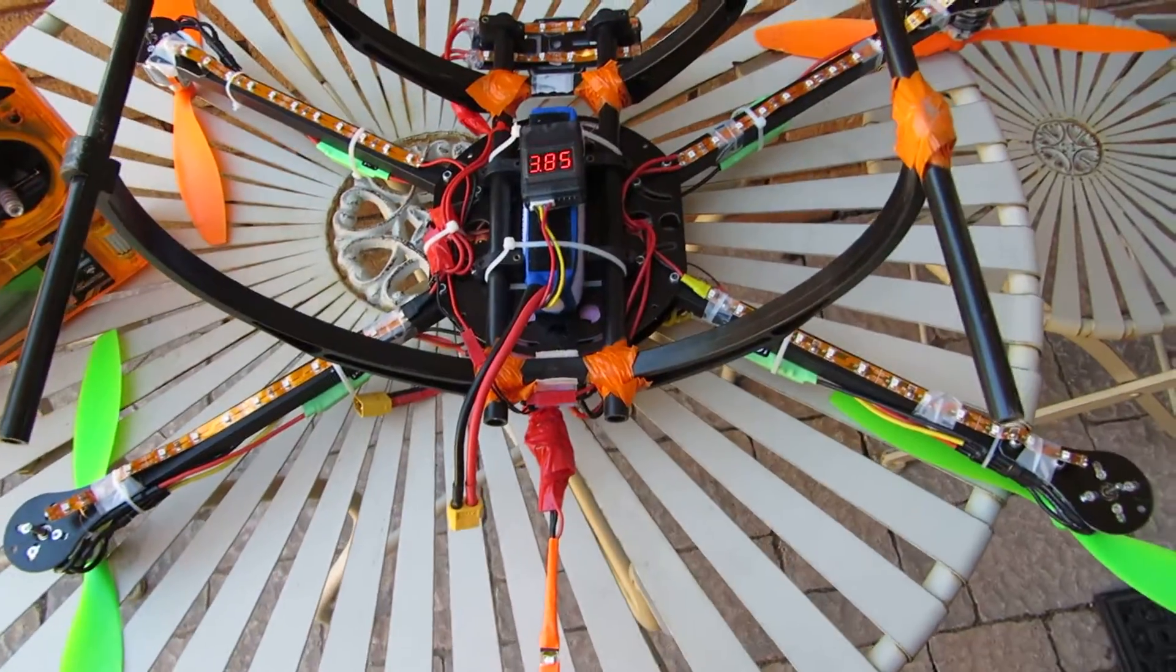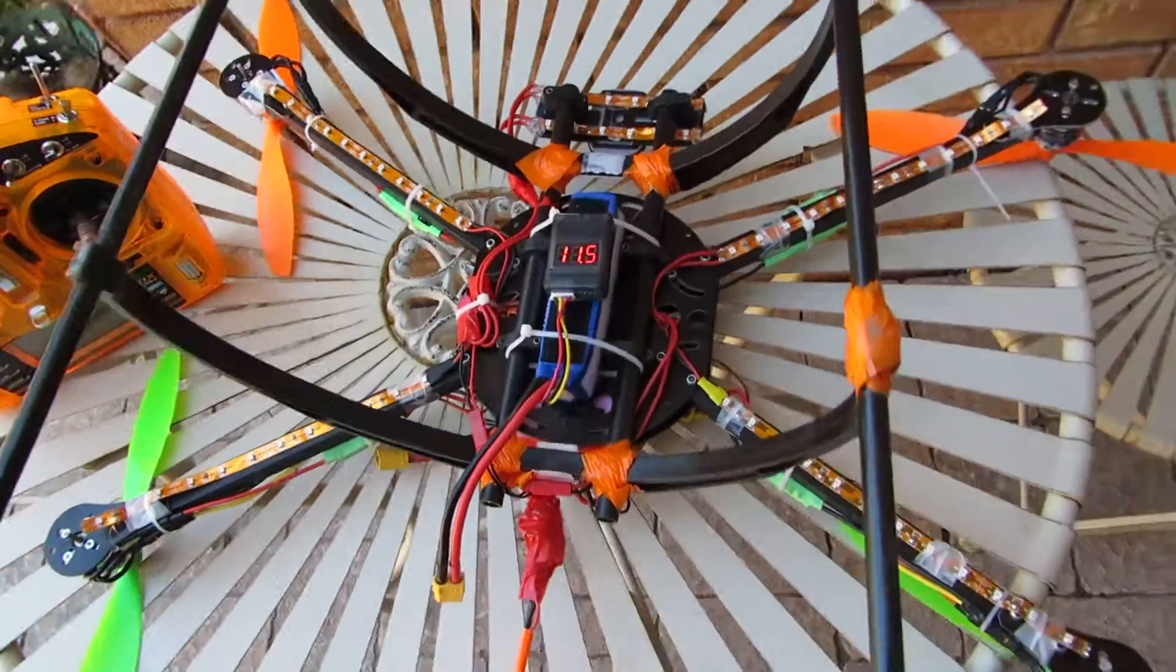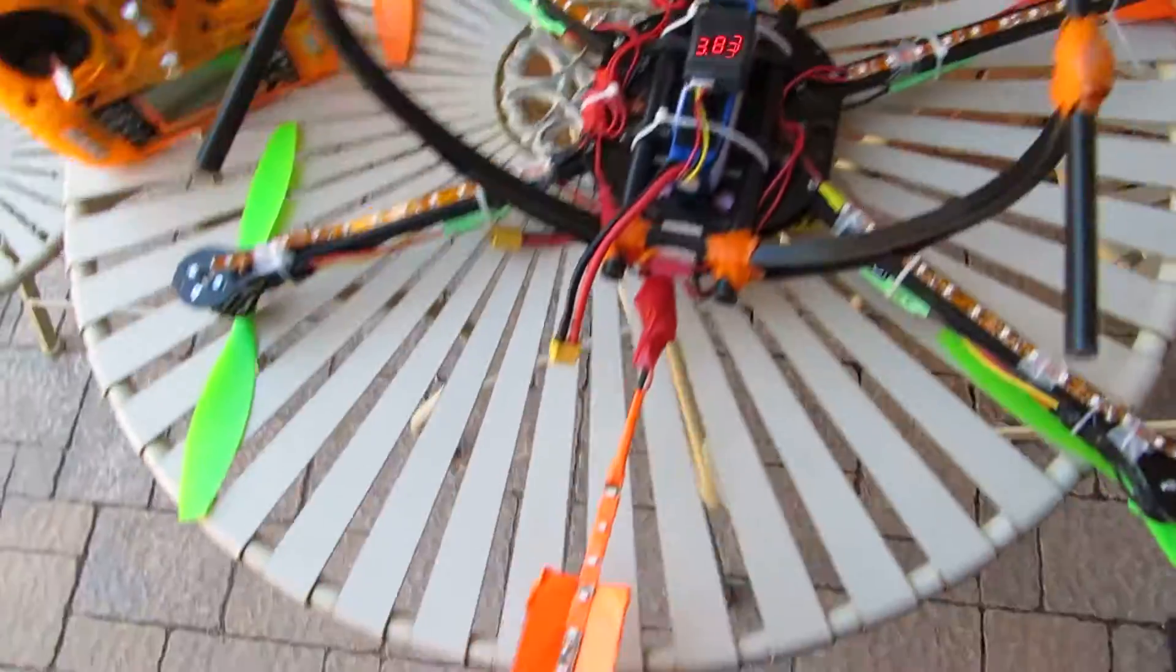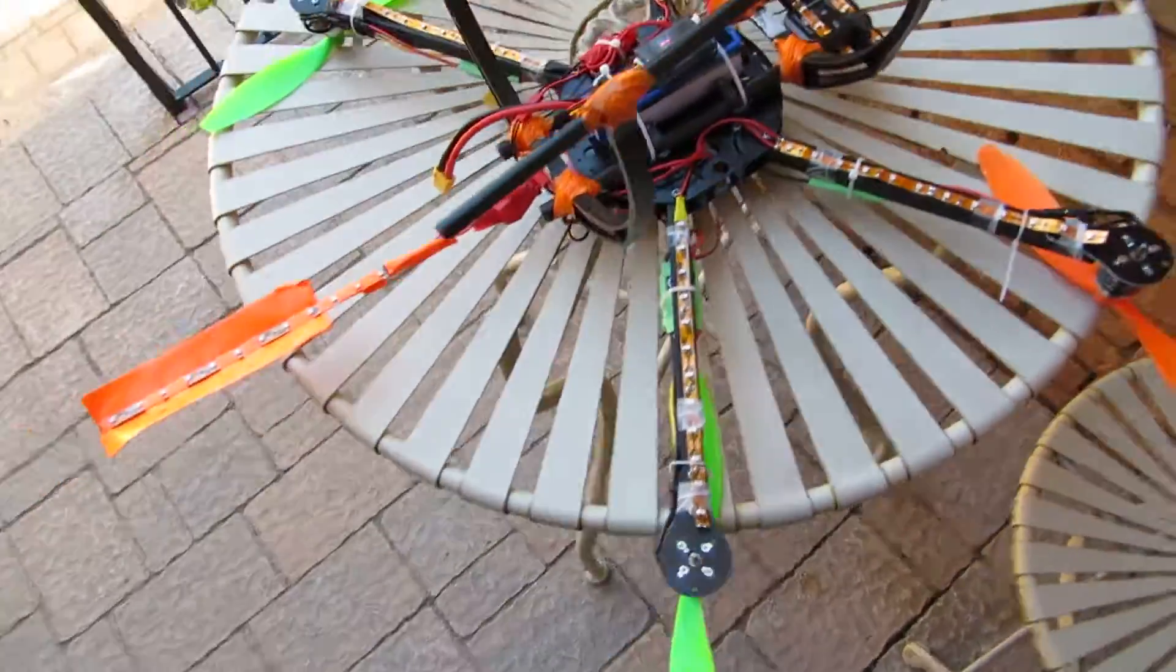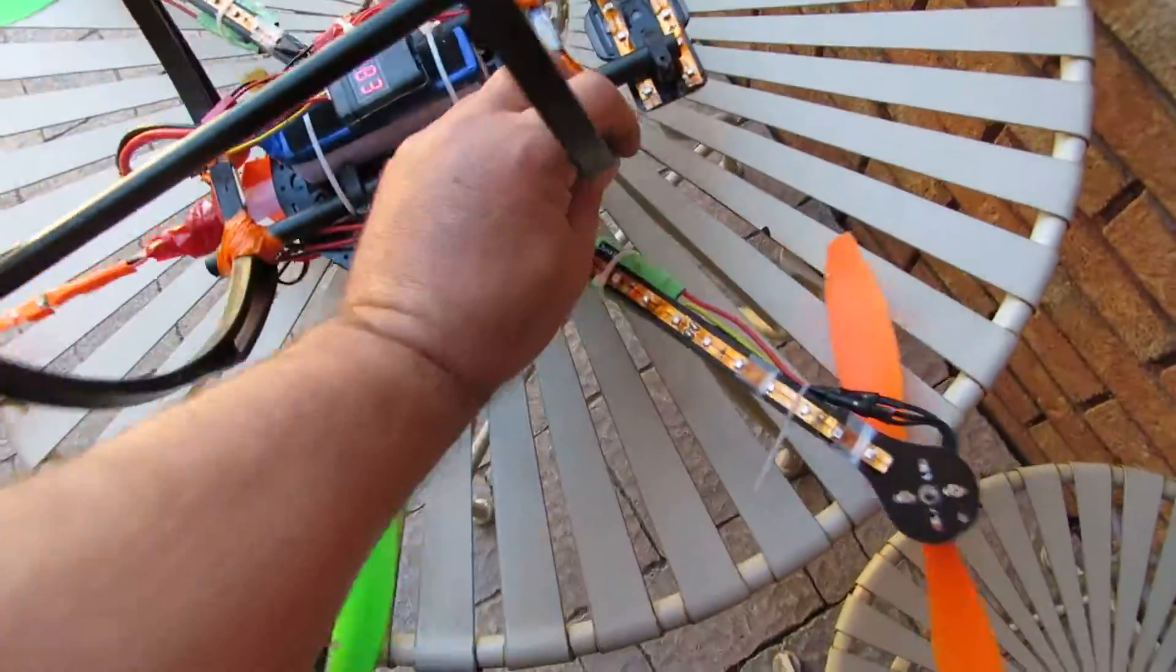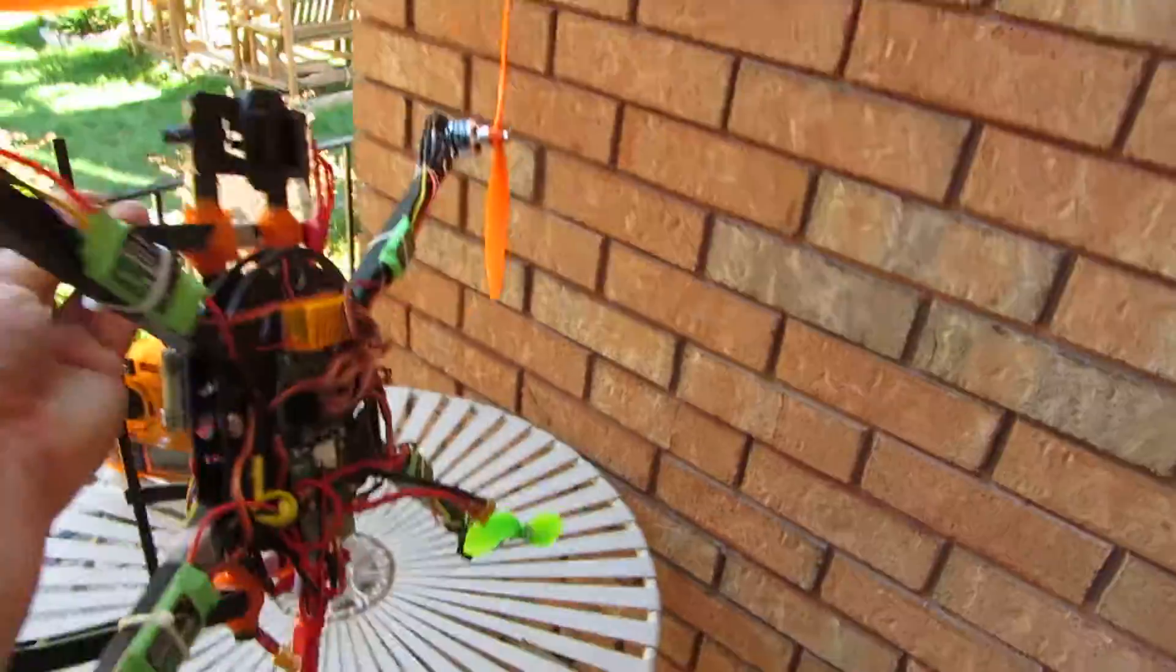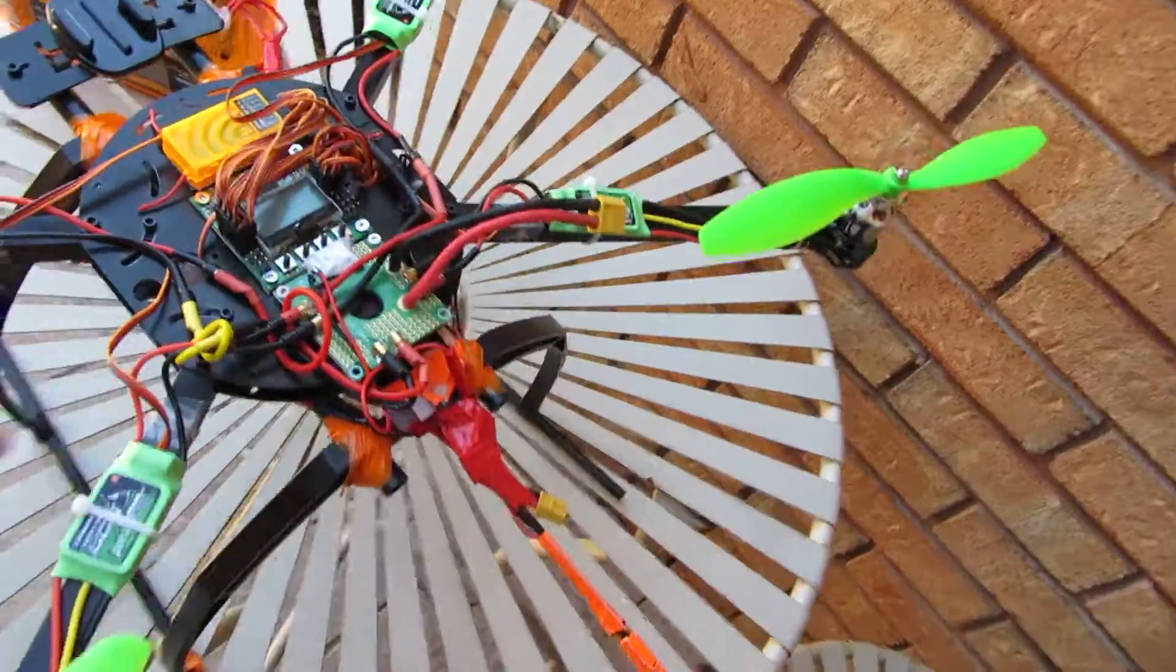It's really easy to see in pitch black too, and just telling where your orientation is. Orange blades in the front, green blades in the back. Put in some extra blades in case they break, and these motors are really good motors too.